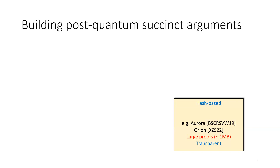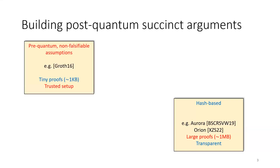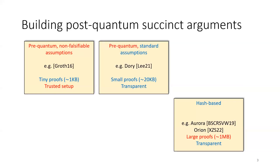One thing we can do to construct other types of post-quantum succinct arguments is to take inspiration from pre-quantum ones. There are pre-quantum proof systems like GROTH16 which have really tiny proofs but rely on a trusted setup and strong non-falsifiable assumptions. And there are also proof systems like DORY which have slightly larger proofs but a transparent setup and standard assumptions.